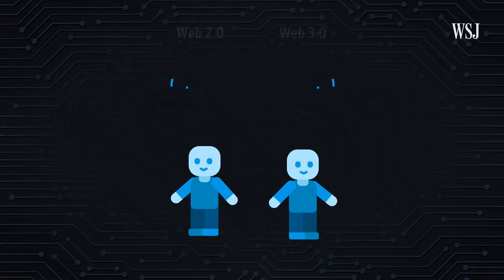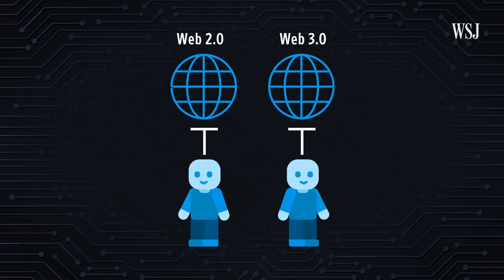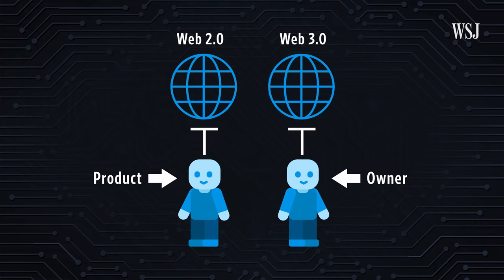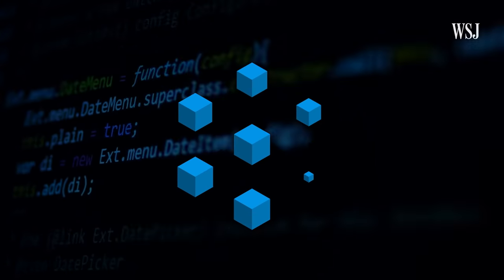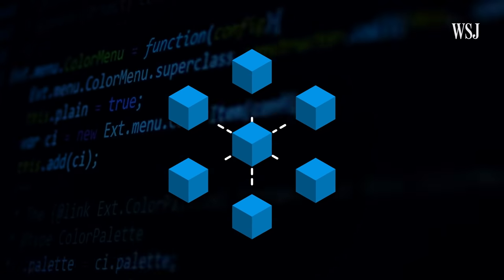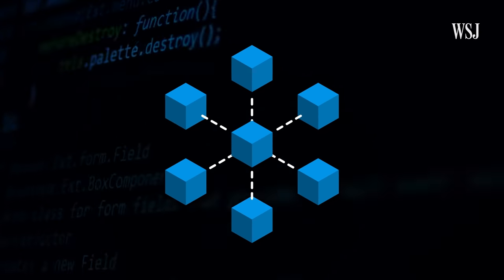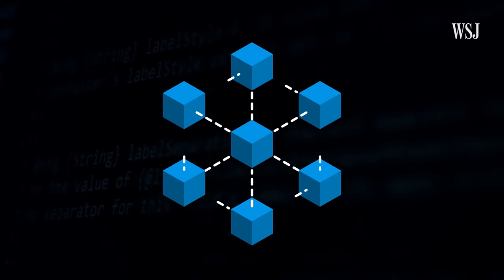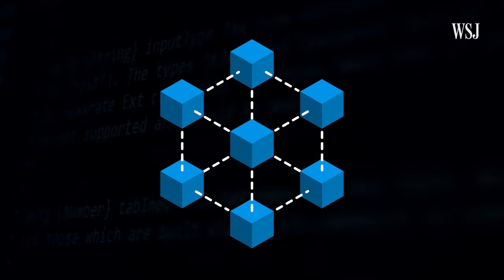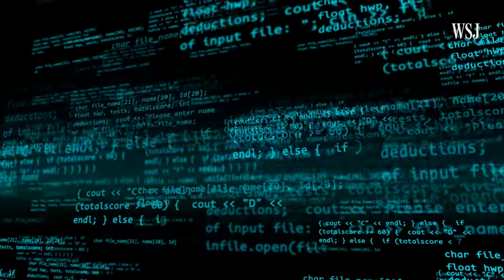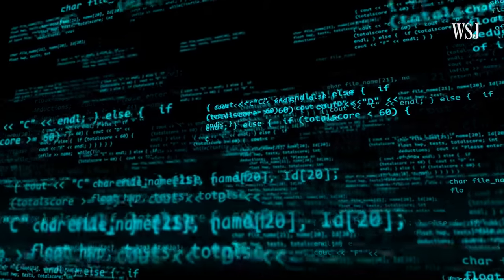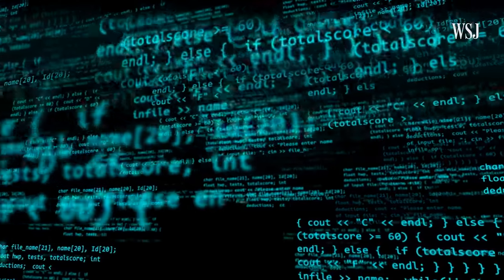In this vision for a Web 3.0 world, people would have more control over their data and be able to sell it if they choose. And it would all be operated on a decentralized distributed ledger technology. The most common version of this is known as the blockchain. While still considered relatively new and unproven, it could offer more transparency and autonomy for users.